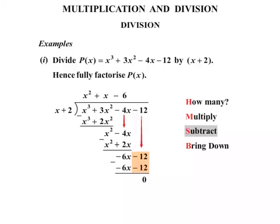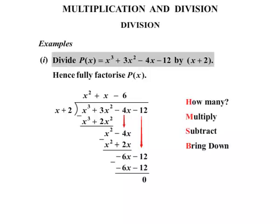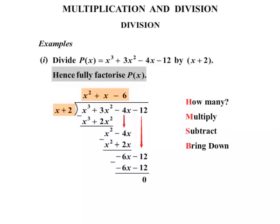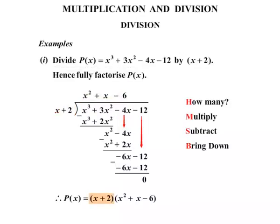The subtraction step: looking at it, they are in fact identical, so minus 6x minus minus 6x is zero, and minus 12 minus minus 12 is also zero — the whole thing is zero. Nothing else to bring down, so we've done the division. We can now fully factorize the polynomial: x plus 2 times x squared plus x minus 6. That quadratic can be broken into two brackets: x plus 3 times x minus 2.